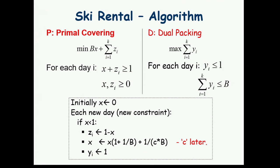Initially X is zero — we don't own any fraction of the solution. As long as we haven't bought all of the equipment, we need to satisfy the constraints. We set ZI to be 1 minus X so the constraint X plus ZI is satisfied. Since we've acquired some credit by doing at least one day of skiing, we update X multiplicatively.